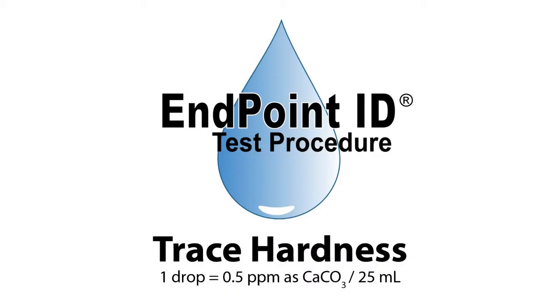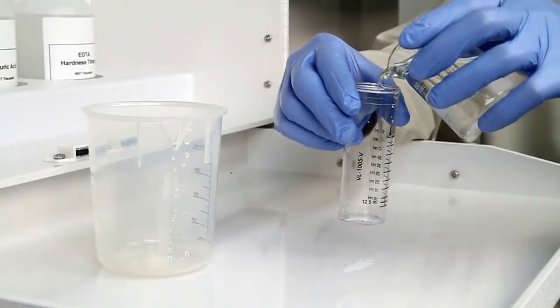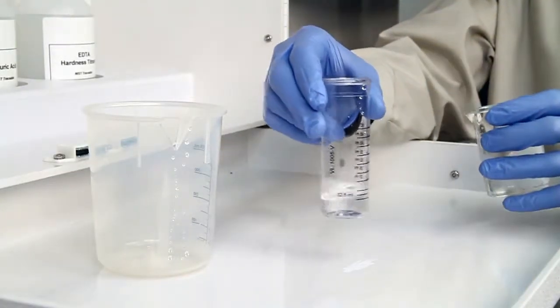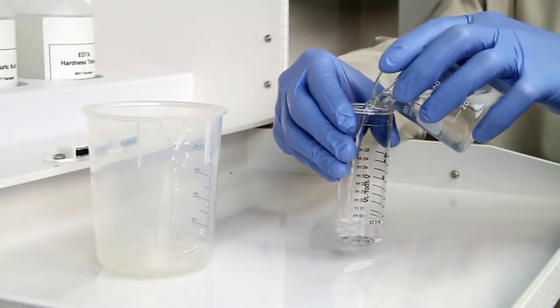This is a demonstration of a trace hardness drop count test kit using Endpoint ID procedures. The first step according to the Endpoint ID procedure is to gather an accurate sample. The smallest change in sample size will lead to inaccurate results.